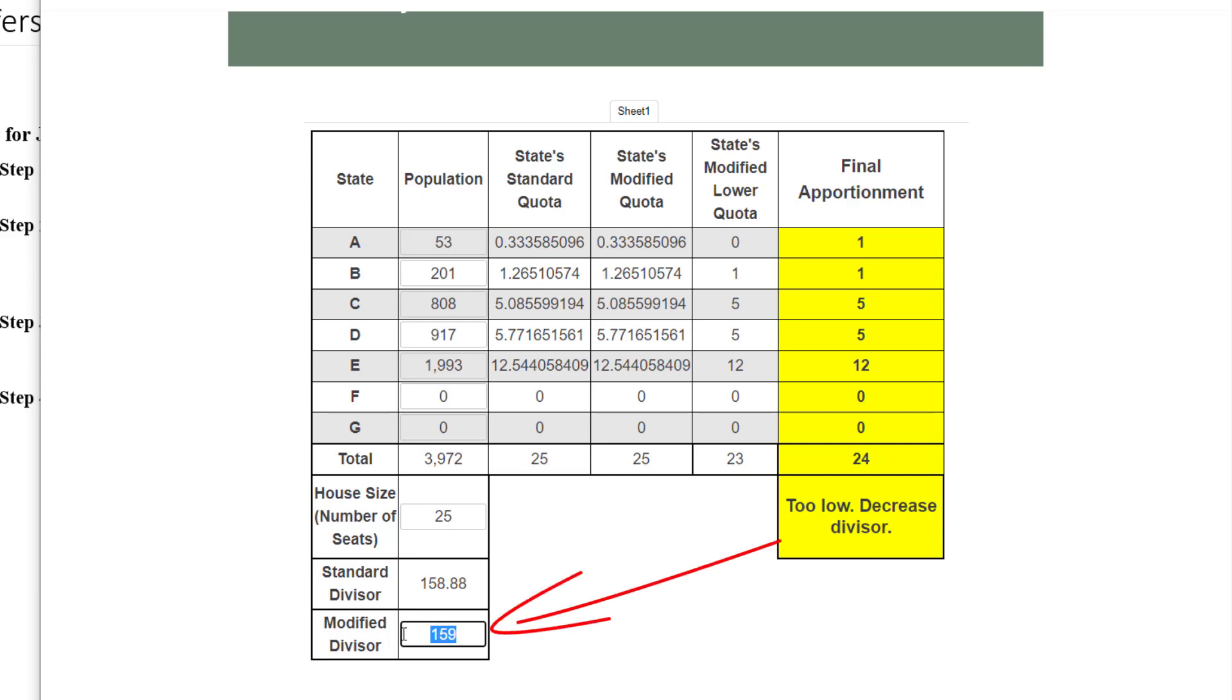So I'm going to put in a lower divisor like 150, and you see it says too high. We get 26 in our final apportionment. So I'll try 153, and it says just right 25, and then I can compare, and you see we still have 1, 1, 5, 5, 13 for the final apportionment. So we got it right.